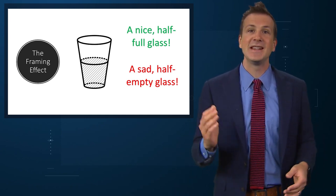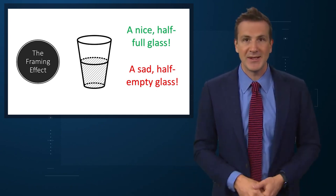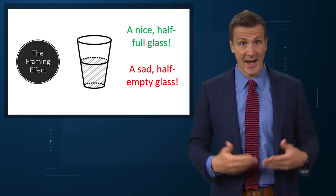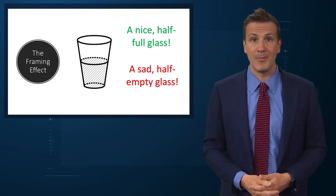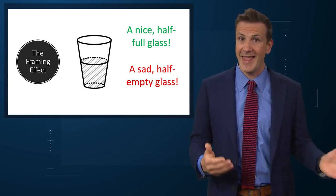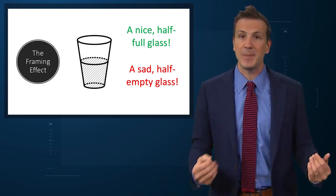Number two: The framing effect. Given the exact same data, I can influence your choices based just on how I present it. In medicine, a surgeon might tell a patient that they have a 95% chance of surviving an operation, or they could say they have a 5% chance of dying. And that framing of the same data will drastically influence what the patient chooses to do.